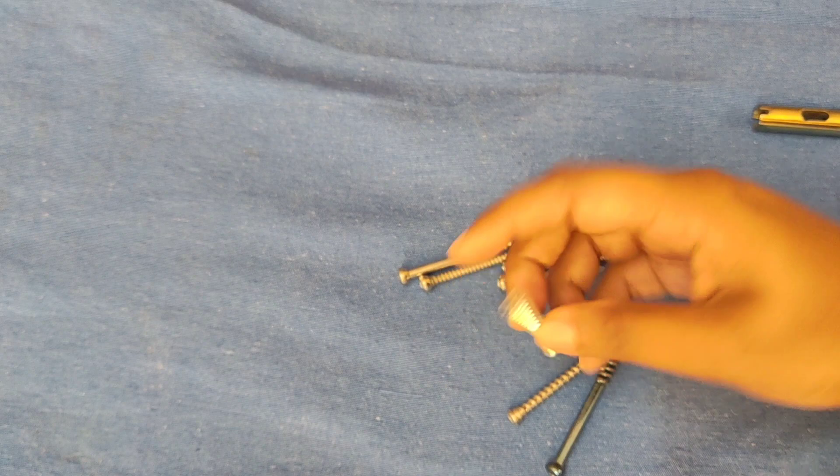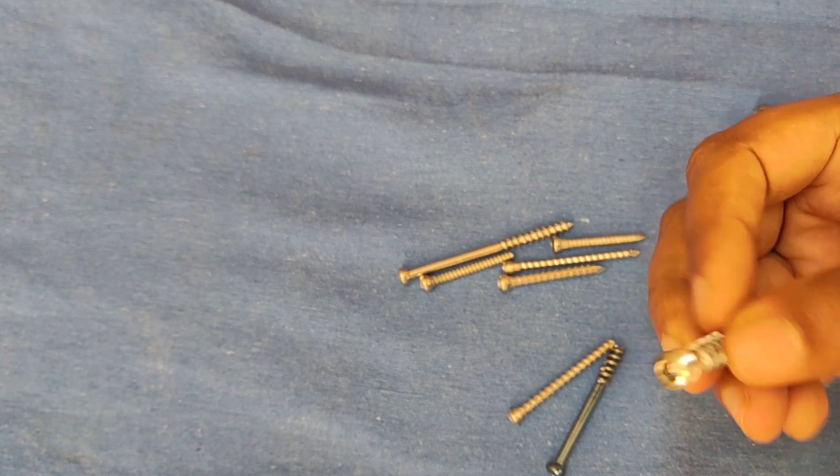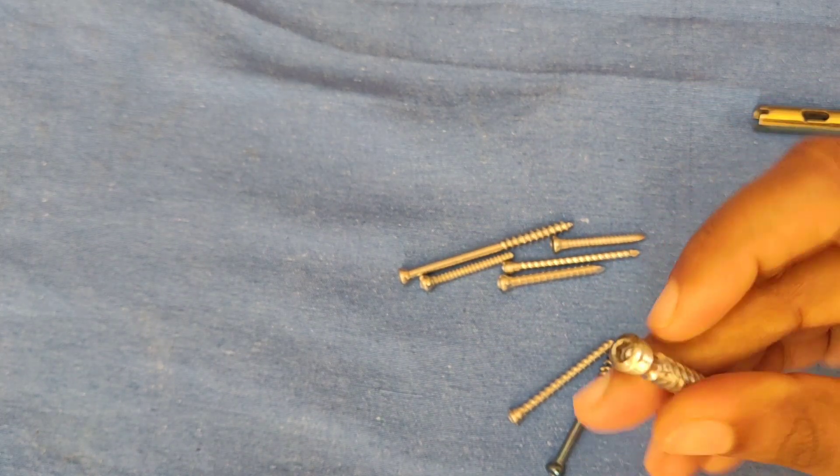Parts of a screw: head, shaft, thread, and tip.